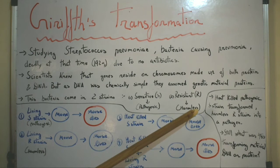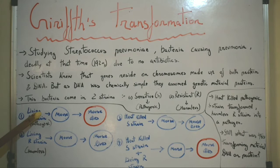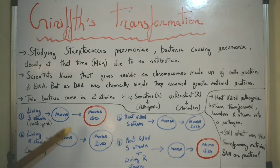In the first experiment, Griffith took the living S strain — the pathogenic strain — and injected it into a mouse. The mouse died because of pneumonia. In the second experiment, he took the living R strain — the harmless strain — and injected it into a mouse. The mouse lived because the immune system was able to kill the harmless R strain.